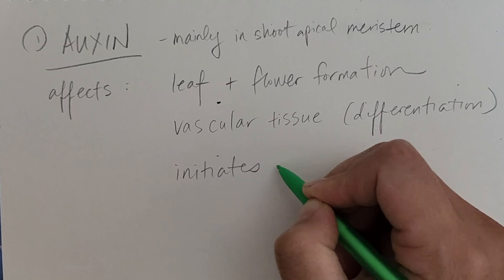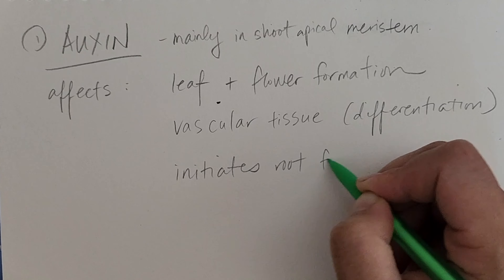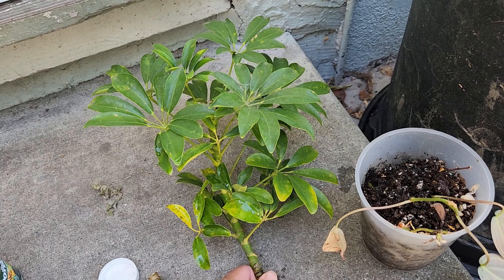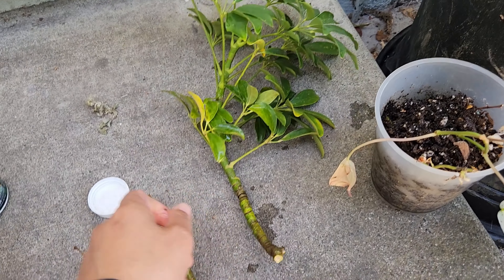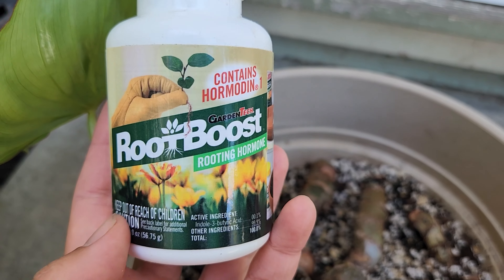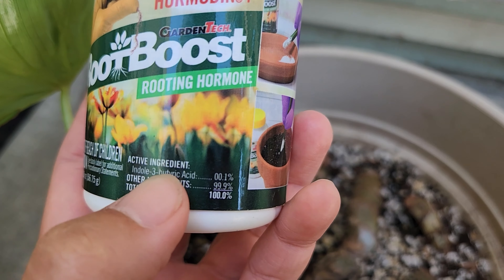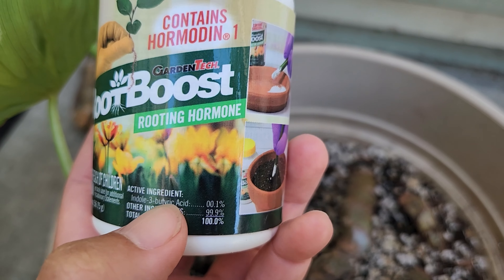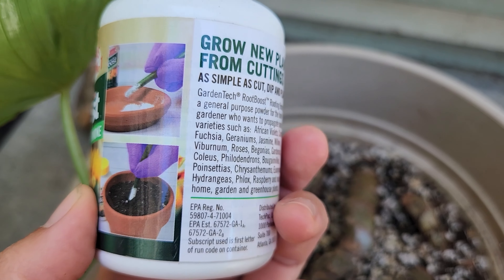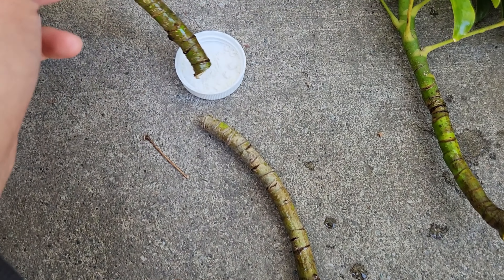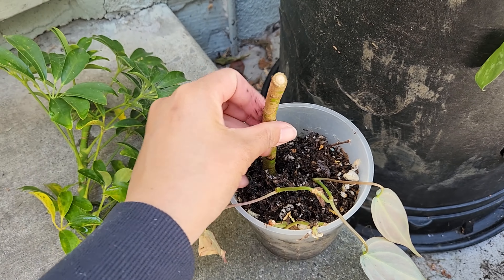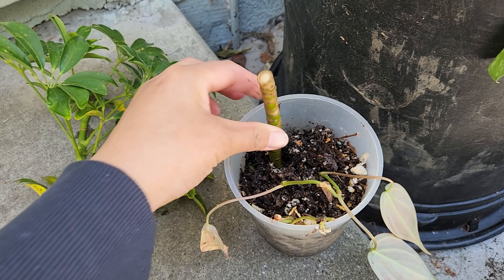Traditionally there are five classes of plant growth regulators, but there have been a lot more groups identified that aren't going to be covered. In this video I'm only covering the two classes that the arborist study guide actually includes as key terms, and these are auxins and cytokinins. The other three traditional classes will be covered in a separate bonus video.